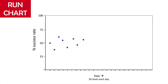A run chart has time on the x-axis. This can be intervals of minutes, days, weeks, months, etc. In this case, AJ will be plotting data daily. On the y-axis is the measure of interest. It's up to AJ to select what measure matters to him most. AJ chooses percent of successful three-point shots taken each day.